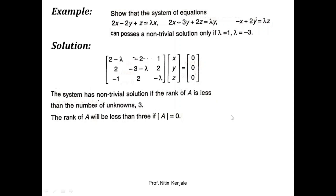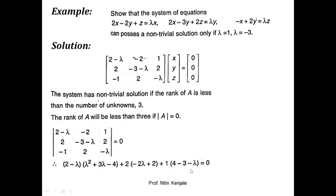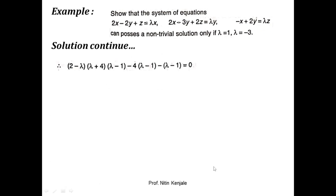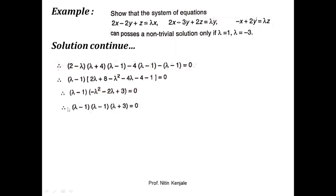So we calculate the determinant of A and equate it to zero. This calculation gives us an equation in lambda. When factorized, we get (lambda - 1)(lambda - 1)(lambda + 3) = 0. You can pause the video to check these calculations. Solving this equation, we get lambda = 1 or lambda = -3. Therefore, the system will possess a non-trivial solution only if lambda = 1 or lambda = -3.